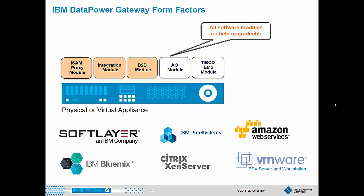DataPower Gateways are available in several form factors. The physical form factor is an ultra-secure, tamper-resistant hardware appliance that meets some of the most stringent security certifications, with about 20 or so processors and 192 gigabytes of memory. There's a virtual form factor deployable in VMware ESX Server, VMware Workstation, and Citrix XenServer, where you can adjust memory and processor as necessary — a very convenient way to provide personal DataPower devices to developers and test engineers. We have specialized images deployable into Amazon EC2 as well as IBM SoftLayer, and for SoftLayer you have the flexibility to deploy on bare metal servers or virtual servers. DataPower can also be deployed into IBM Pure Application environments.